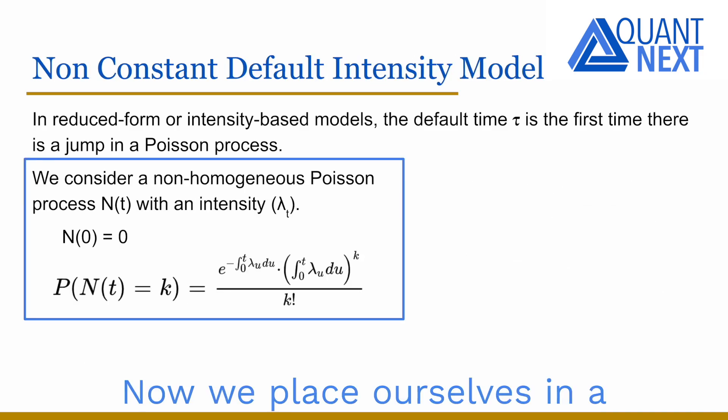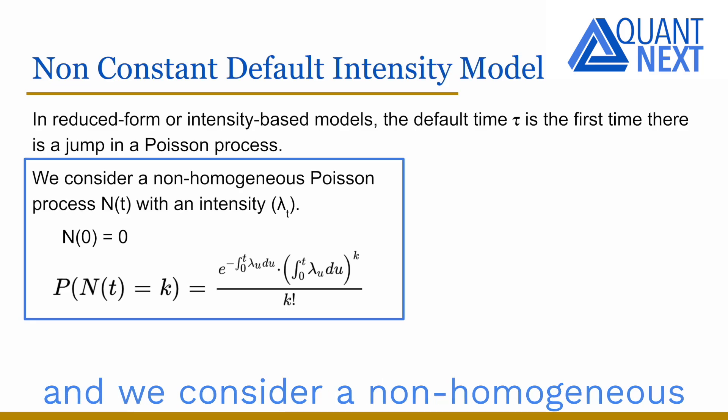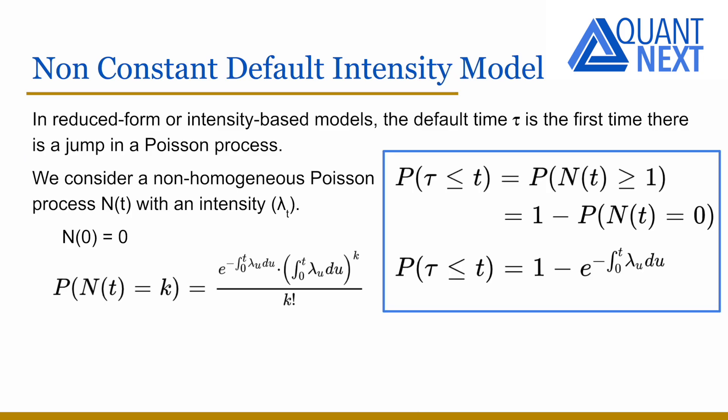Now we place ourselves in a non-constant default intensity model and we consider a non-homogeneous Poisson process with parameter lambda_t, lambda being now a function of time. In this case, the probability of default before t is equal to 1 minus the exponential of minus the integral of lambda between 0 and t.